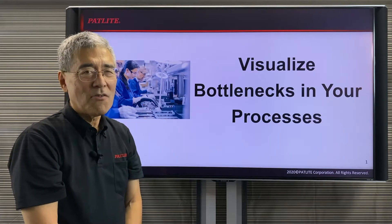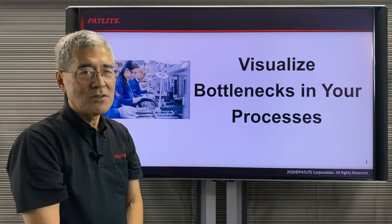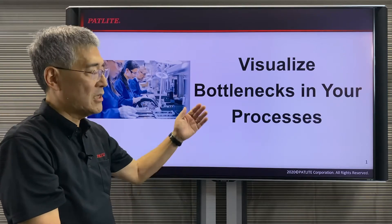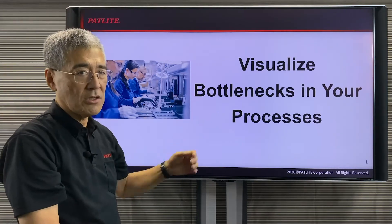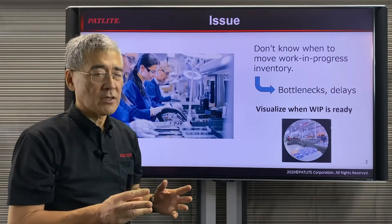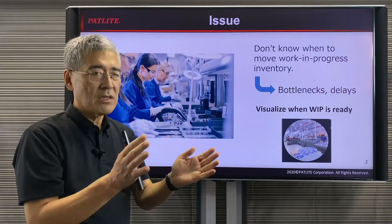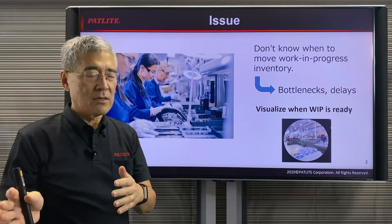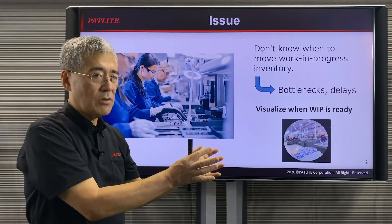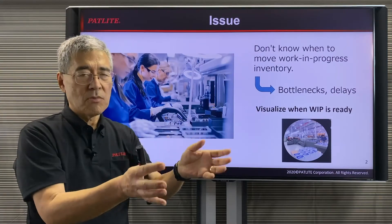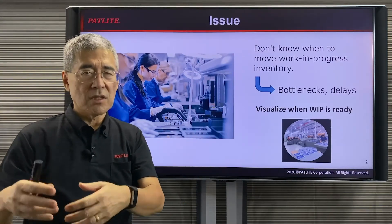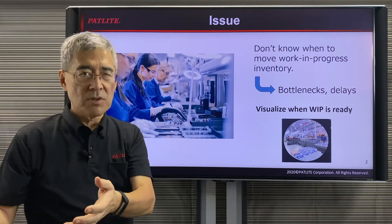Hi, I'm Paul with PatLite and today I'd like to talk to you about visualizing bottlenecks in your processes. To manufacture a product, there are many steps to be taken. Once one process is complete, the product needs to be moved from one location to a different location so the next process could be started.